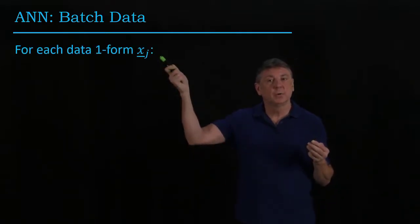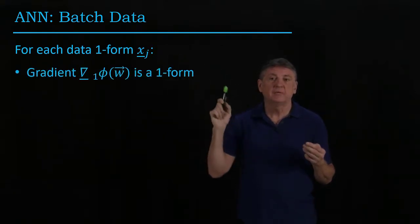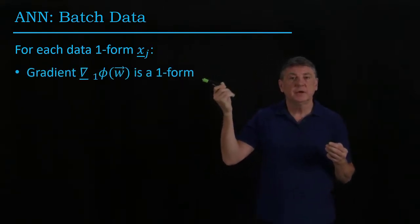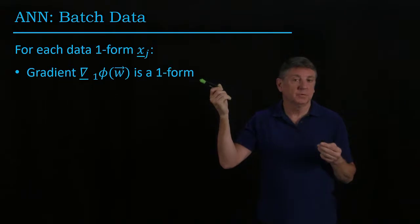So by batch data, we mean that we have more than one data one-form that's coming in. And for each one of these, the gradient is a distinct one-form.